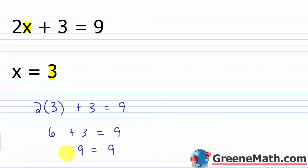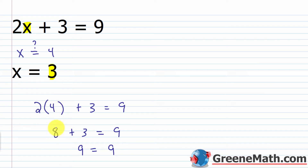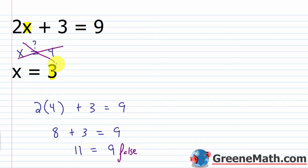To further expand on this, let's say I chose X equals 4 and asked: is that the solution? Well, 2 times 4 is 8, so I'd have 8 plus 3, which is 11. This 11 does not equal 9 — that's a false statement. So X does not equal 4. That's wrong. We know X equals 3. So how do we go about solving a linear equation in one variable?